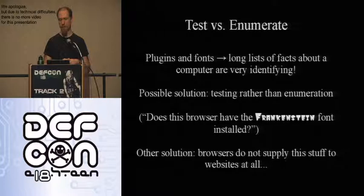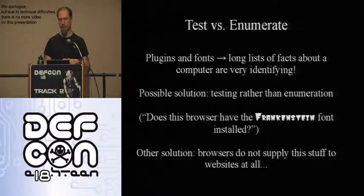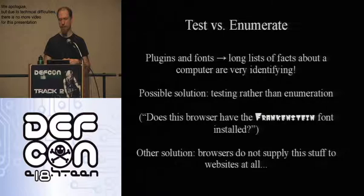Perhaps an even better solution would be to not expose system fonts in the browser at all — if a website wants to render a specific font, it should supply the TTF file along with the page. The problem is that even if we block the Java and Flash APIs that return font lists, there are nasty techniques for detecting fonts using CSS, which is almost unblockable: you render a font in an invisible box and measure its width. There's a website called Flipping Typical that demonstrates this. This stuff is hard to block.